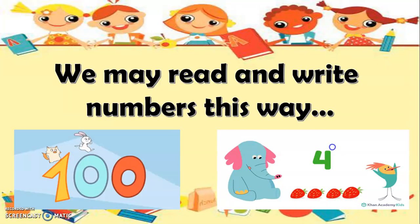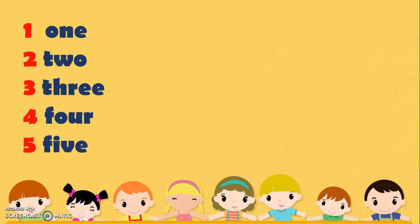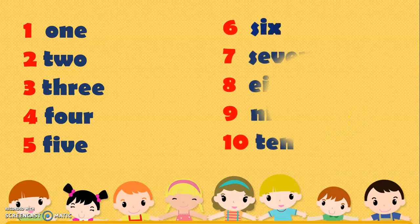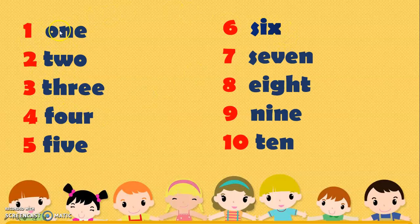We may read and write numbers this way. We have here 1, 2, 3, 4, 5, 6, 7, 8, 9, and 10. Please remember the numbers — the numerical symbol and the number words from 1 to 9 — because we're going to need them, especially when we are already reading and counting numbers that are more than 10.